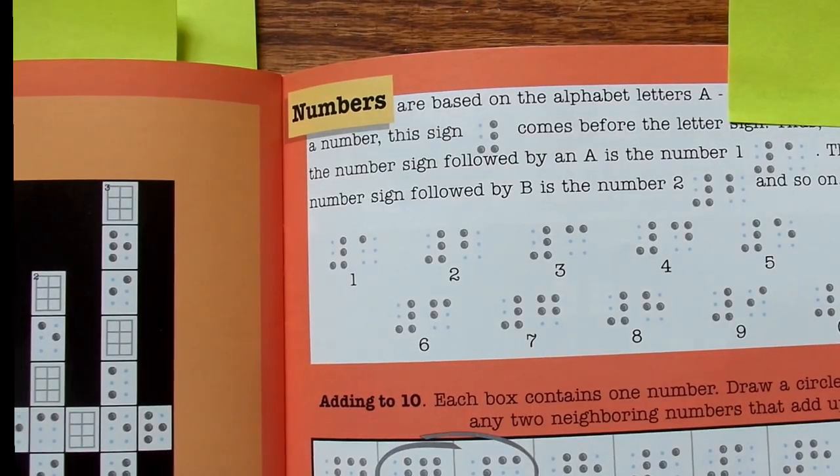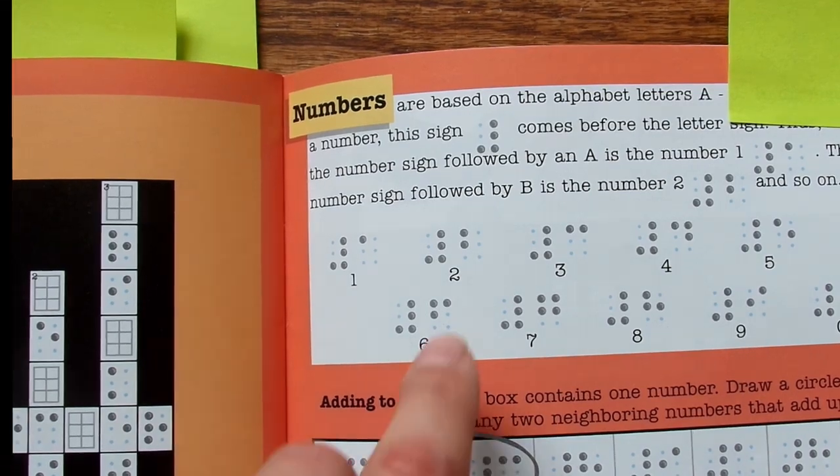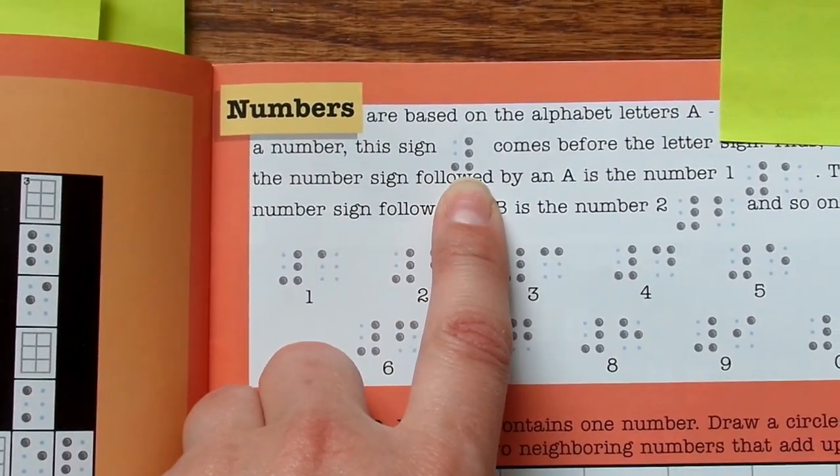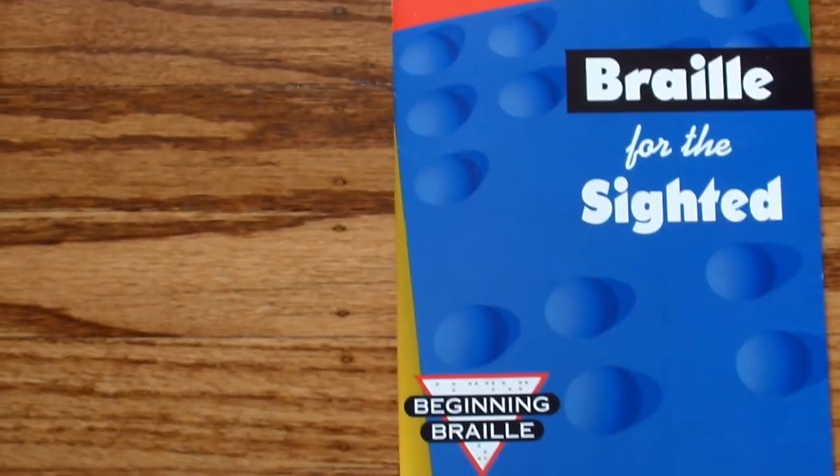And this book also explained how to write numbers, which are the same as letters, except it's preceded by a backwards capital L. That's dot three, four, five, six. So I love this book. I'll put the link below. I highly recommend you check it out.